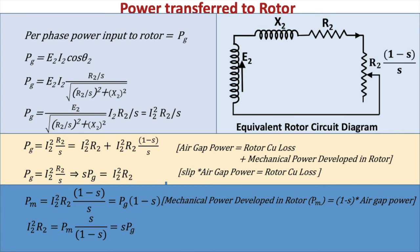The mechanical power developed in the rotor is Pm = I2²·R2(1−s)/s = (1−s)·Pg. Conversely, the rotor copper loss can be expressed in terms of mechanical power as: copper loss = Pm × s/(1−s), or in terms of air gap power simply as s·Pg.